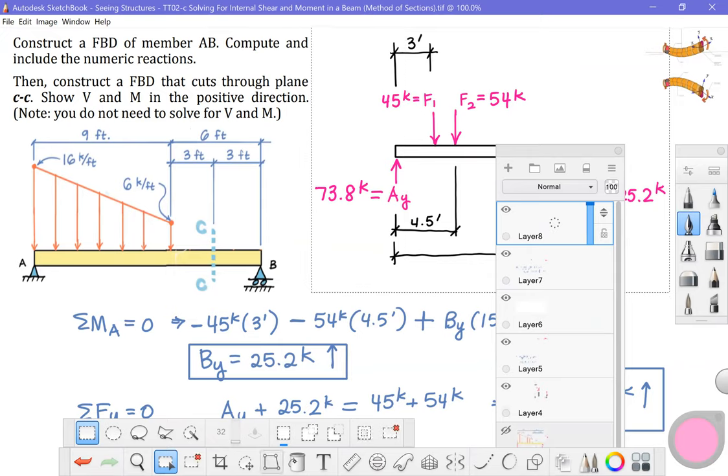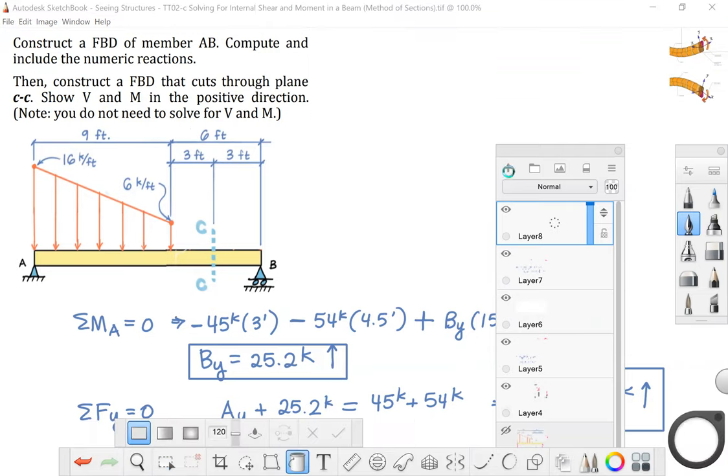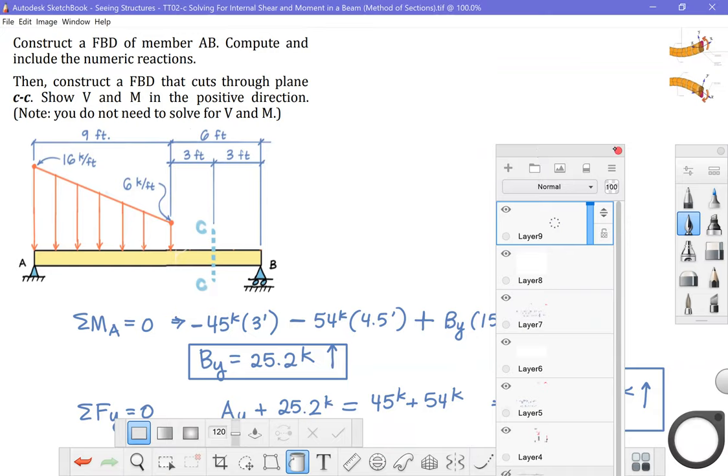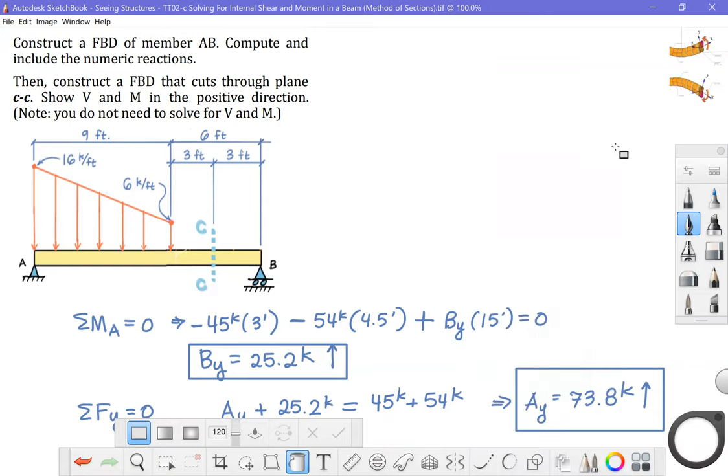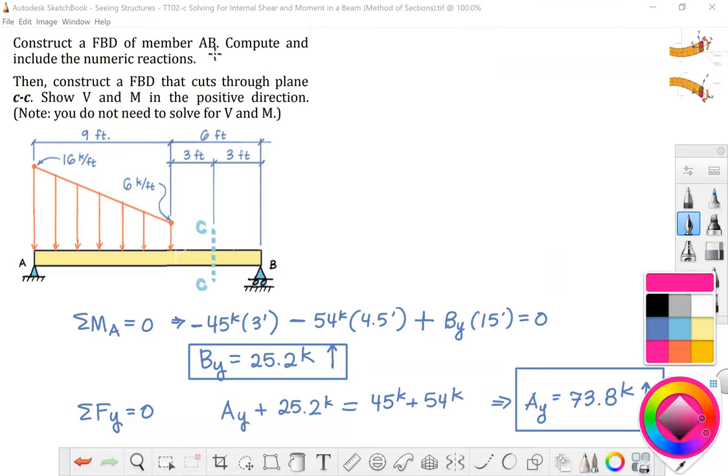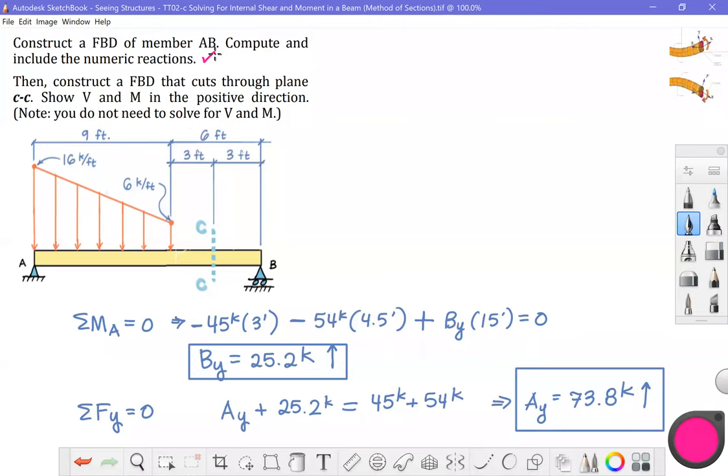I'm actually going to mask out this picture up here. I'll do that by placing a white coat, and then I'm going to draw on top of it. The second part of this problem: we just constructed a free body diagram of member AB. We computed and included the numeric reactions. And now we're asked to construct a free body that cuts through plain CC. And here we have a choice.